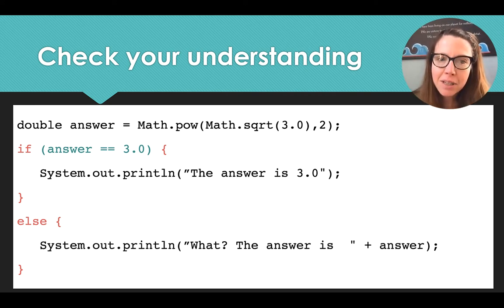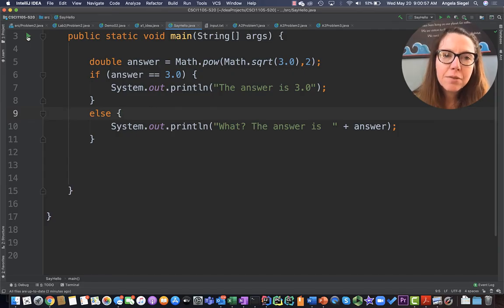Let's see what happens here. We have an if statement and we're going to check a condition. If the answer is equal to three, which I think it should be, then it's going to print the answer is 3.0. Otherwise, so if it's not 3.0, we're going to get a different result.